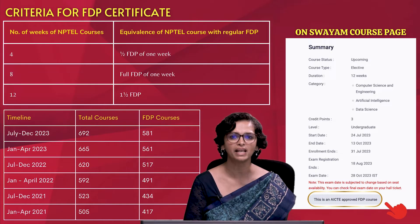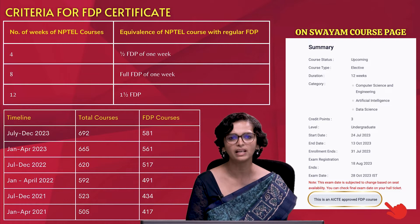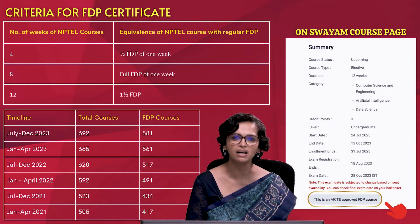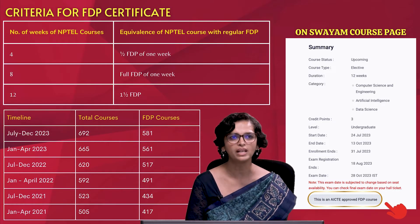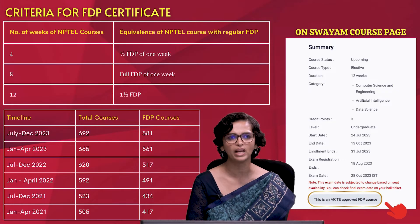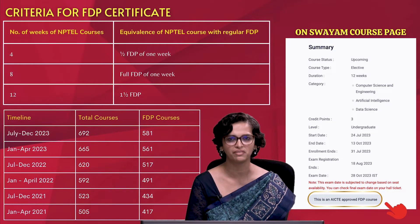The conversion mechanism that AICTE has agreed upon with NPTEL is that a four-week NPTEL course is equivalent to half an FDP of one week, an eight-week NPTEL course is equivalent to a full FDP of one week, and a twelve-week NPTEL course is treated as equivalent to one and a half FDP.